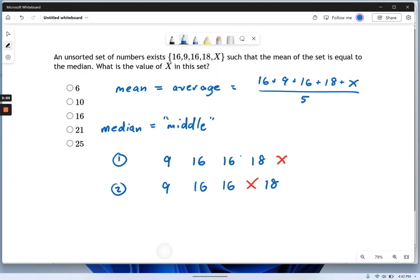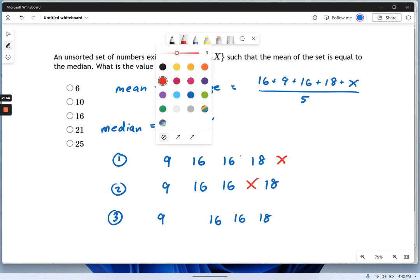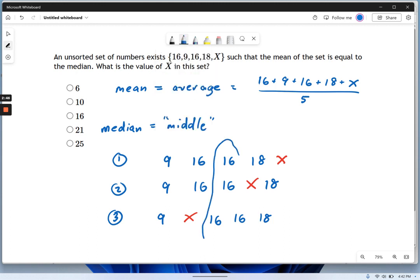What if x is low? I'm going to consider that. Let's say x is something like 13, and it goes in the middle between 9 and 16. So now my set of numbers looks like this with x over here. In either case, in any of these cases, where's the middle? It is right here. So the median, regardless of where x falls, is going to be 16.